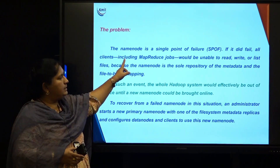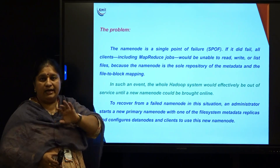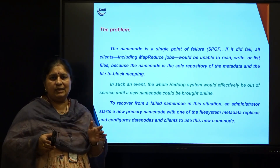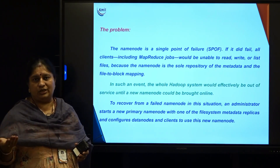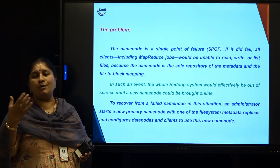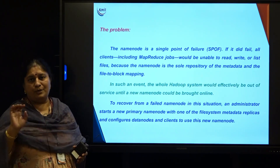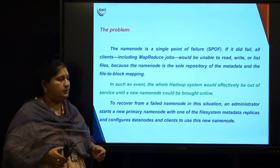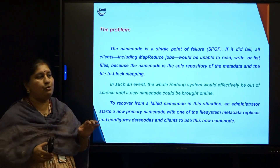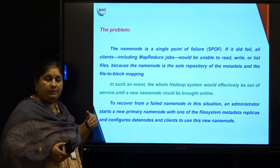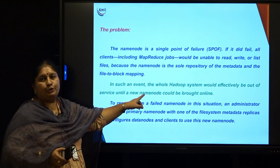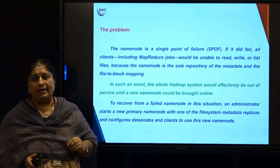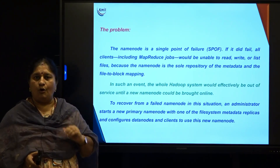If the name node stops responding, you cannot know where the file exists, so none of the read, write, or listing operations can happen. The whole Hadoop system will effectively be out of service. One option is to bring another new name node online. In practice, this was taking more than half an hour to a full day to bring another name node into online operation.